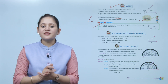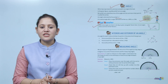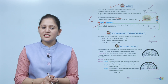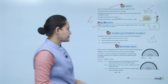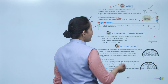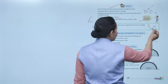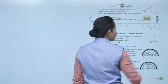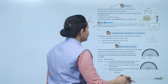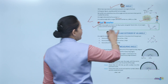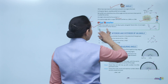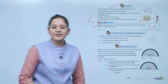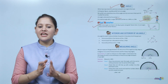Mind booster: How many angles are there in the figure? Name them. The angles are AOB, BOC, and AOC. Do all angles have a common vertex? Yes, that is O.